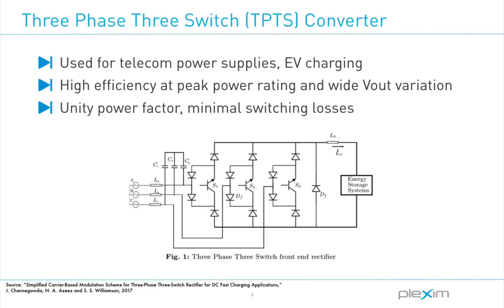The TPTS converter is also a good candidate for charging electric vehicles due to its high efficiency at peak power rating and wide output voltage variation. TPTS can operate at nearly unity power factor, so it is suitable for grid-connected operation. The converter topology is derived from three single-phase buck rectifiers and contains one active switch per leg, thus minimizing switching losses.